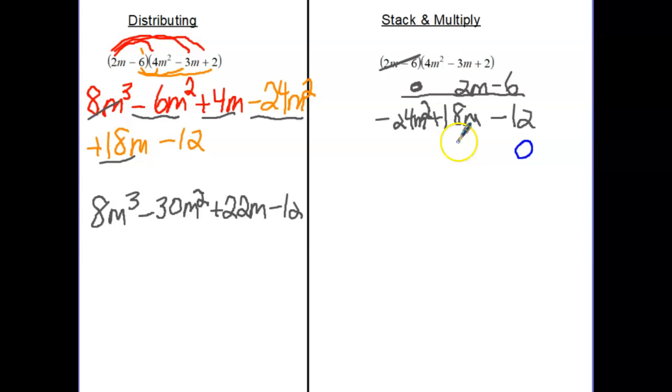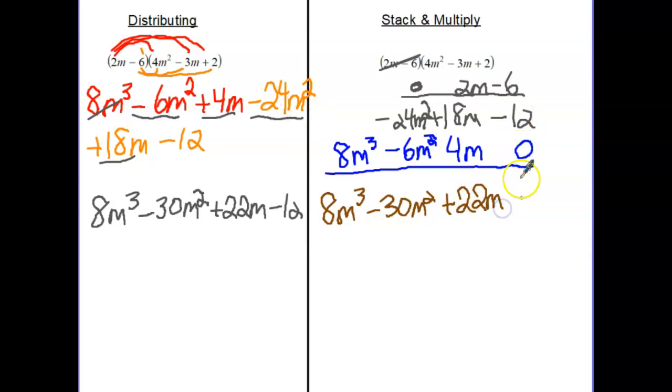I'm going to change colors just because I put in a 0. 2m in 2 is 4m. 2m in negative 3 is negative 6m². 2m times that is 8m³. Draw a line. If you have bad handwriting like me, lining up your like terms is very helpful. So that gives me 8m³. Line up straight there. That's negative 30m². And right there is plus 22m. And then minus 12.